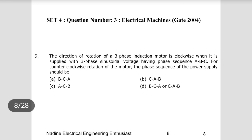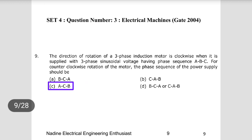Question 3: The direction of rotation of a three-phase induction motor is clockwise when supplied with a three-phase sinusoidal voltage having phase sequence ABC. For counterclockwise rotation, the phase sequence of the power supply should be changed. To reverse direction, only two terminals need to be swapped — change B and C, or A and B — giving sequence ACB. Choice C is the right answer.